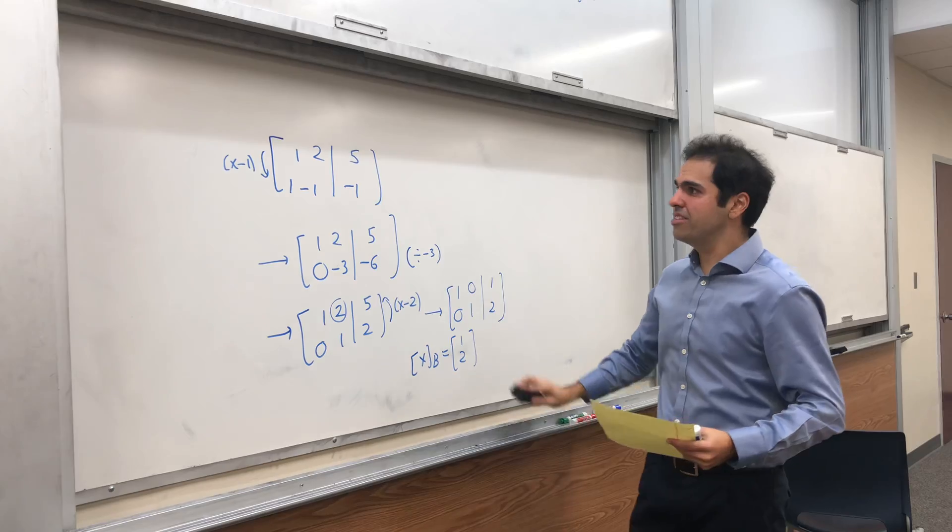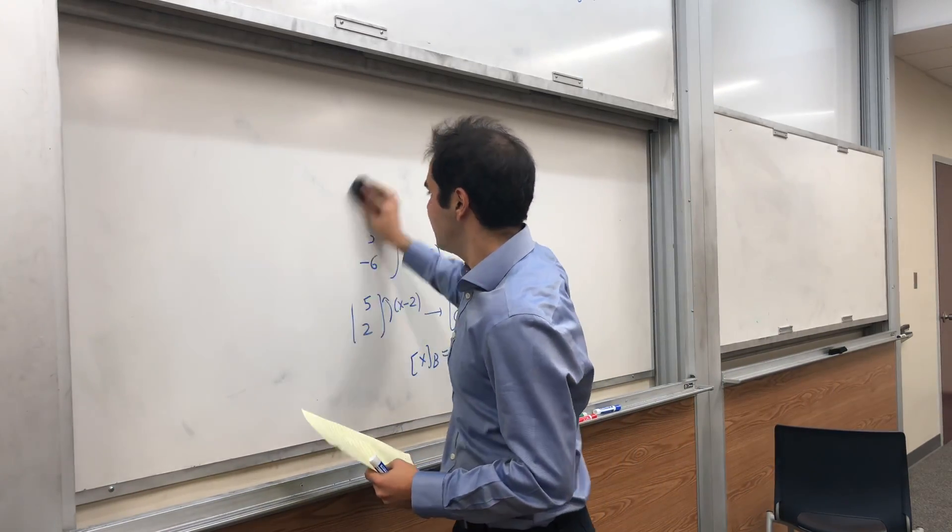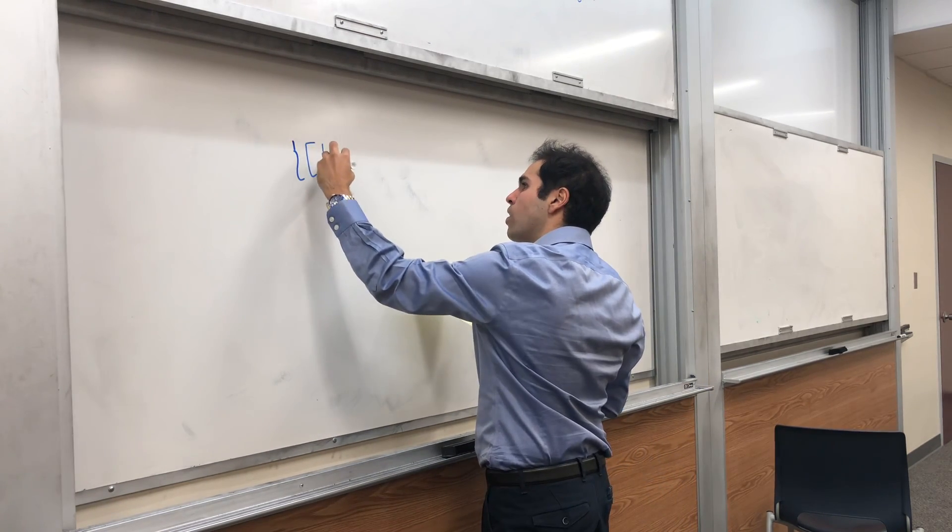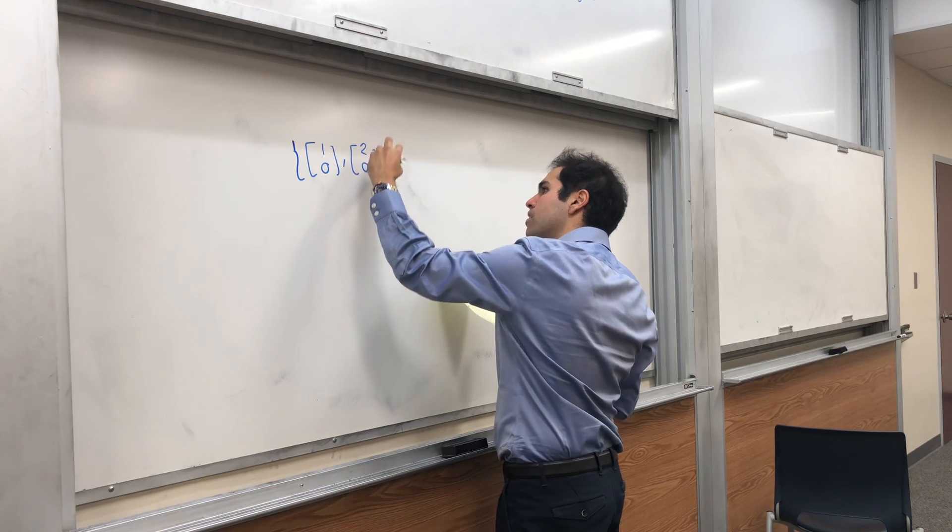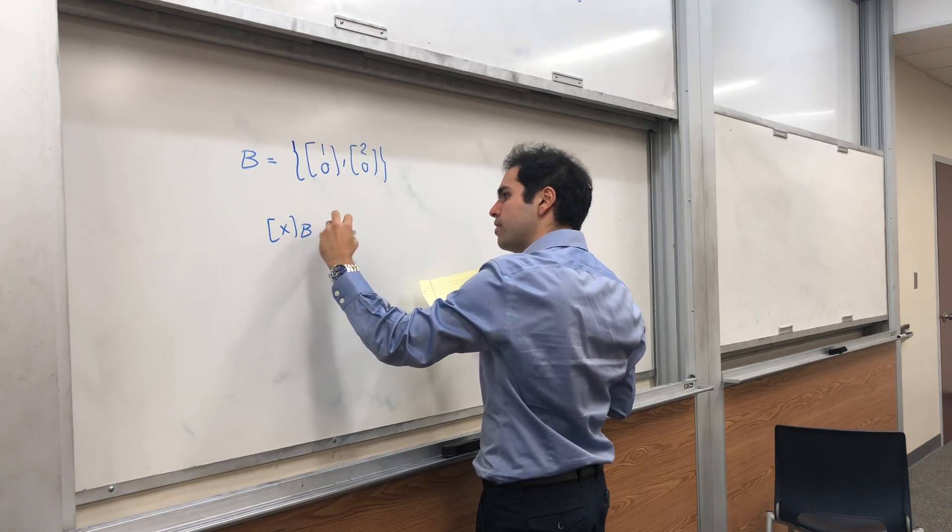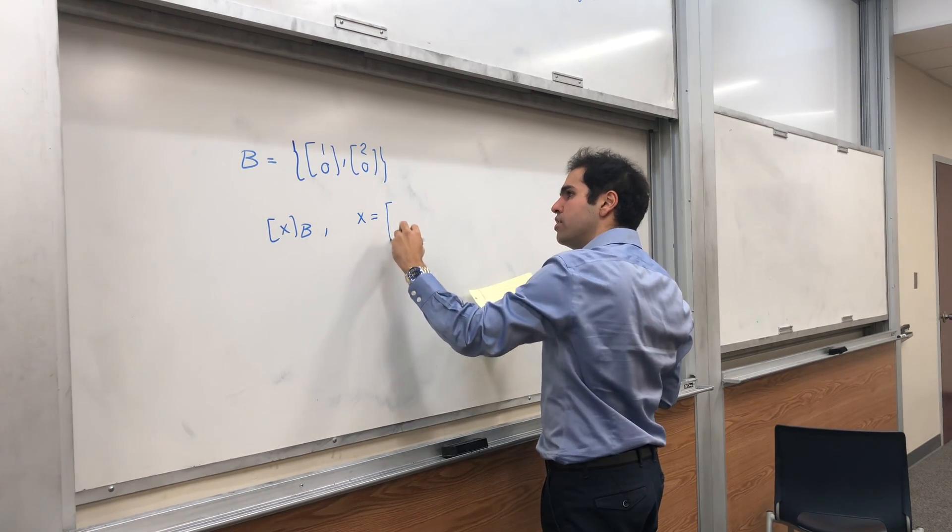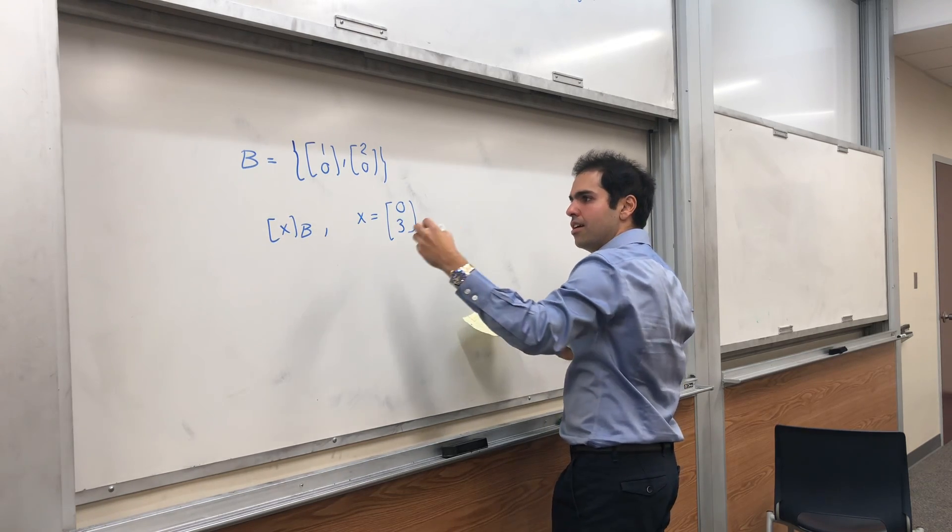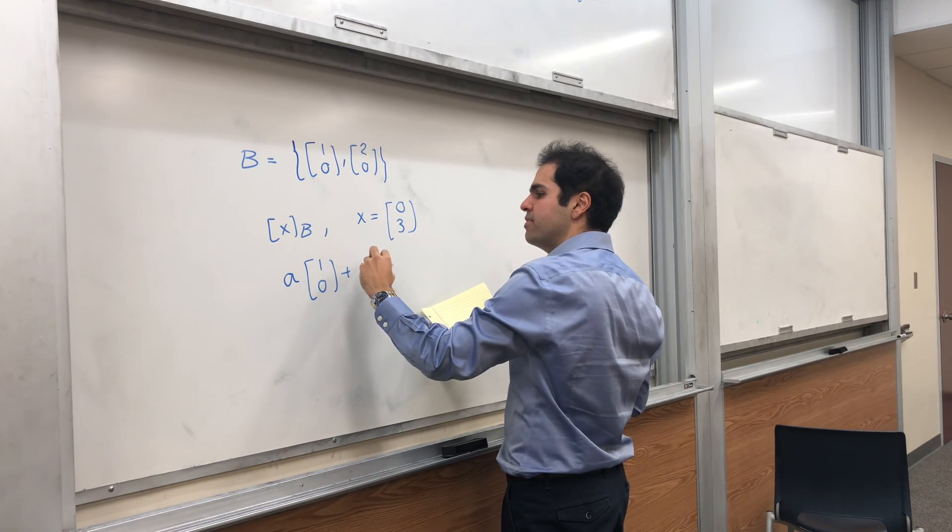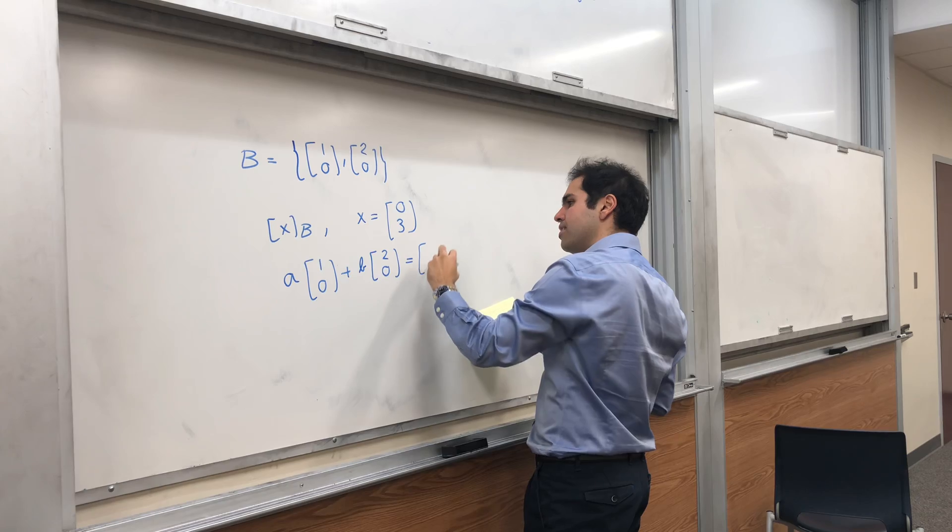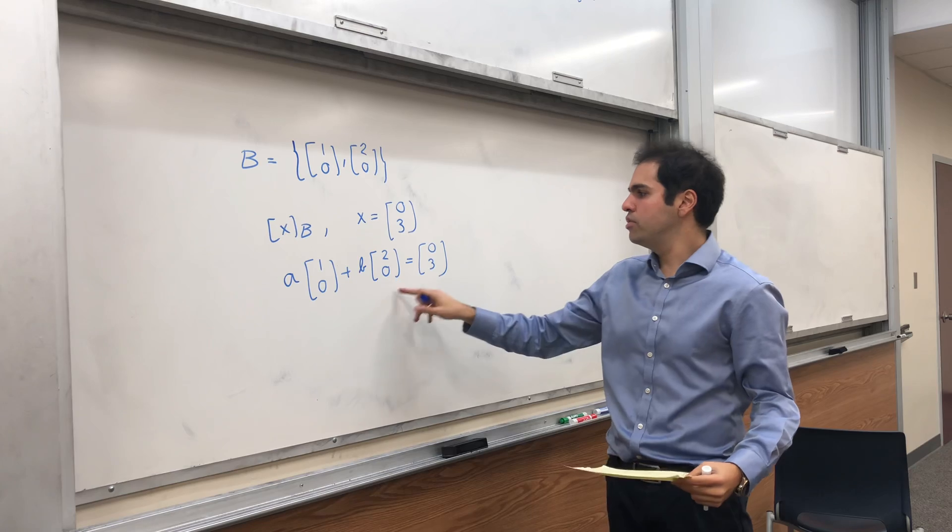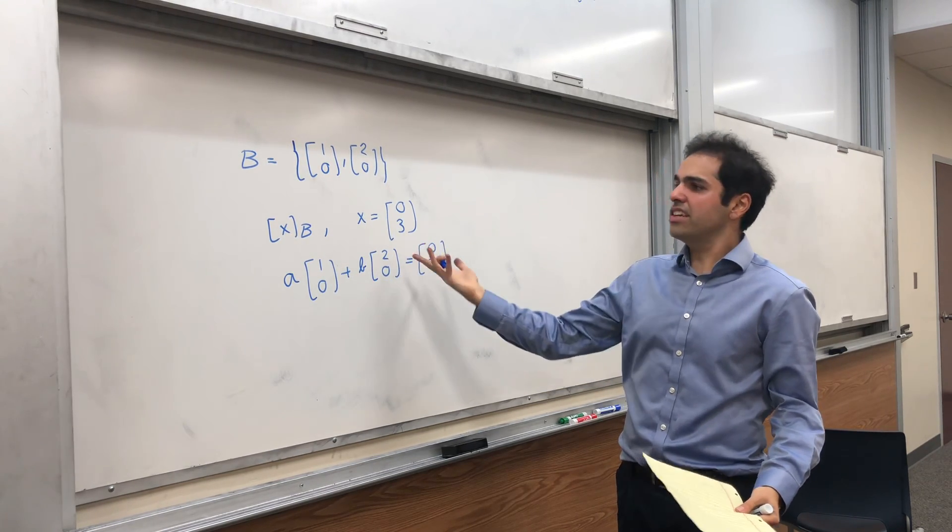Lastly, one thing I wanted to say, why is it important that we have a basis? Well, let me give you two situations where you don't have a basis. Suppose you have the set (1,0) and (2,0). Suppose this is B. Then what are the coordinates of x where x is the vector (0,3)? What this means is, can you find a and b such that you get a steps in one direction and b steps in this direction to get (0,3)? Well, if you actually compare this, it gives you 0 equals 3. So this does not have a solution.